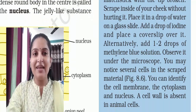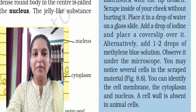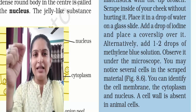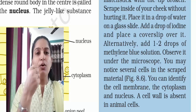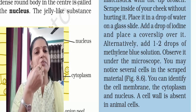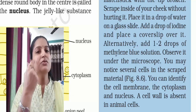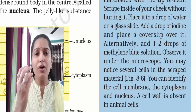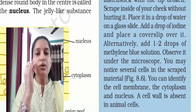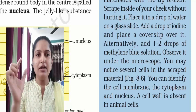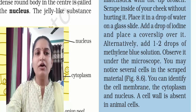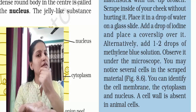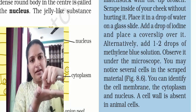So we perform Activity 8.4. What do we have to do? Take a clean toothpick — a soft toothpick or the flat end of a matchstick. With the flat end, gently scrape the inside of your cheek. The cells are very minute so you won't see them, but they do come off. Take those cells and place them in a drop of water on a glass slide.